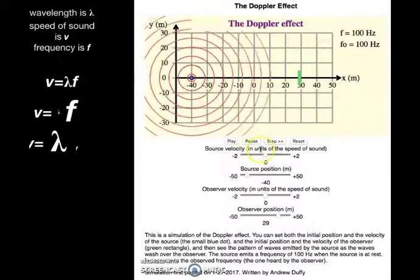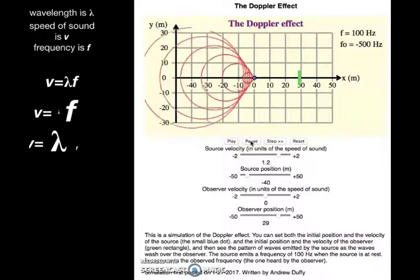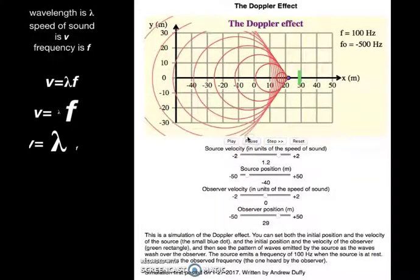And this time, let's make it so our source is traveling faster than the speed of sound. Let's put it up here at 1.2 and reset everything. Okay. Can you see now how the waves are, he's actually passing them. And so we get this area where the sound waves are being all really compressed.